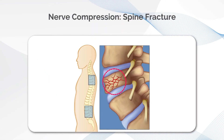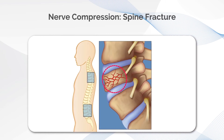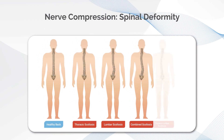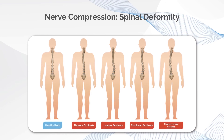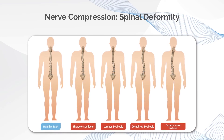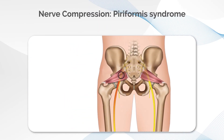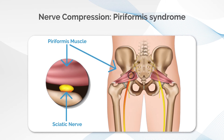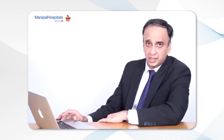Spine fractures can also lead to nerve compression and resultant sciatica. There is also spinal deformity in the elderly or in children, where the spine loses its alignment and curves instead of having bones sitting straight one on top of the other. Outside the spine, piriformis syndrome occurs when the sciatic nerve passes close to or between the fibers of the piriformis muscle in the hip joint region, and compression of the sciatic nerve there leads to sciatica-like pain shooting down the leg.